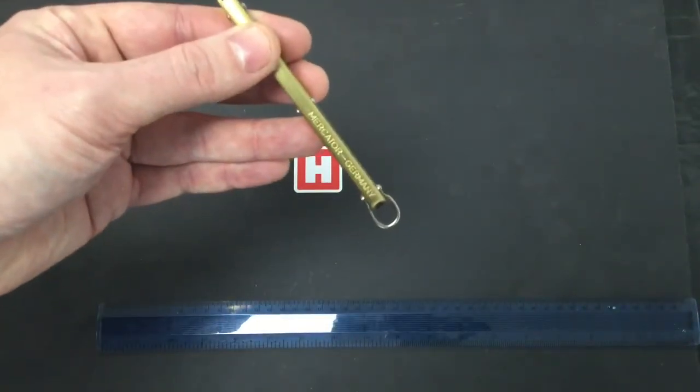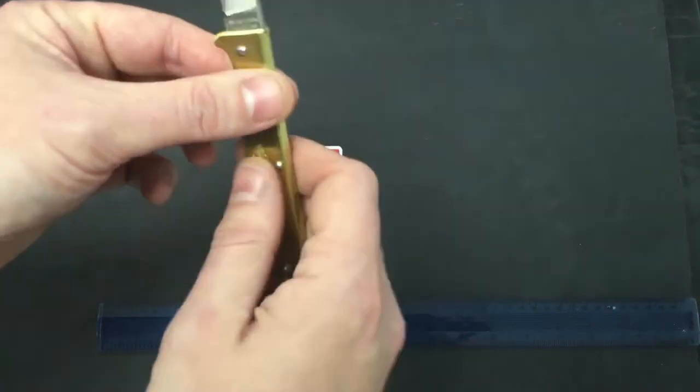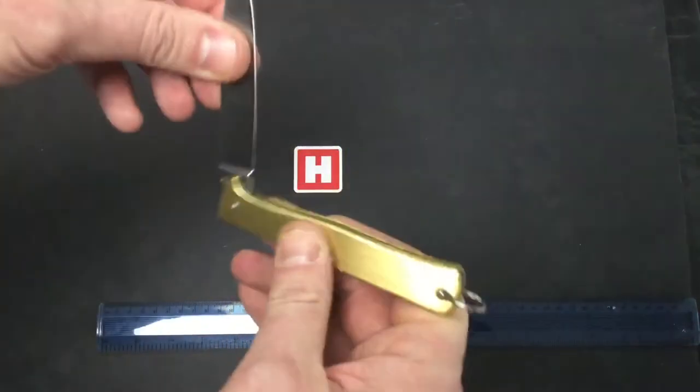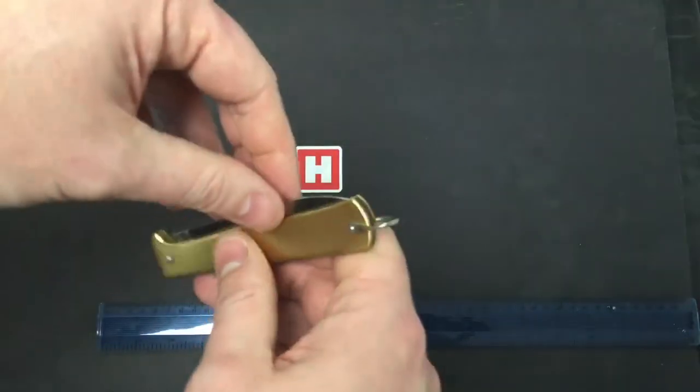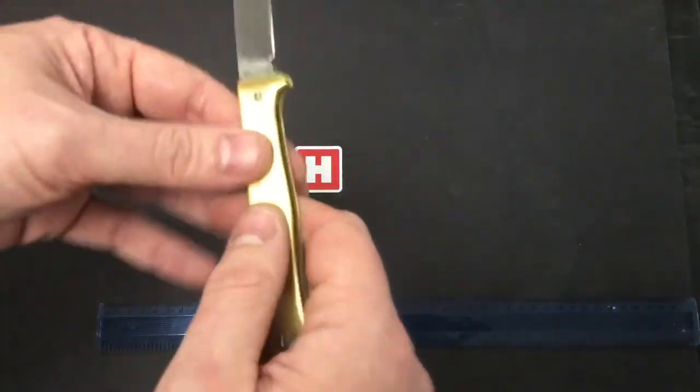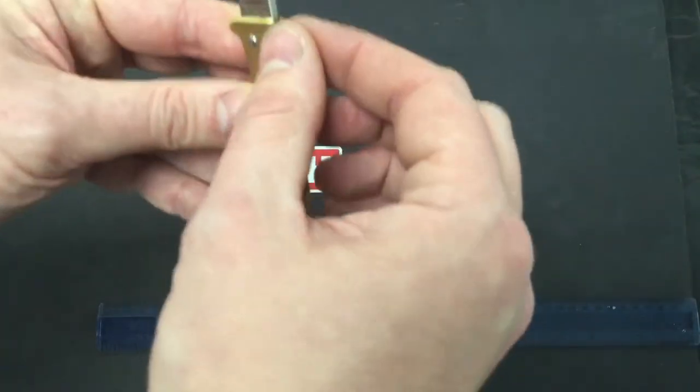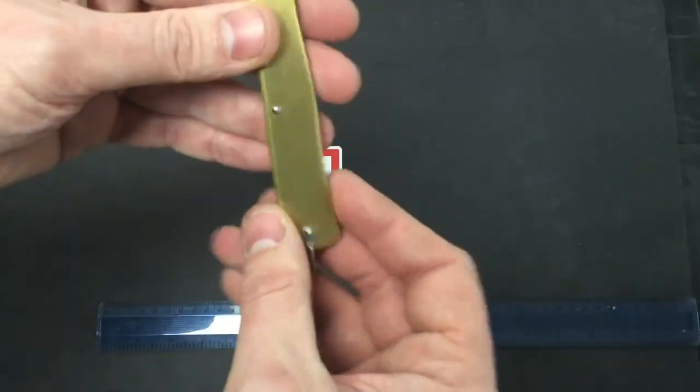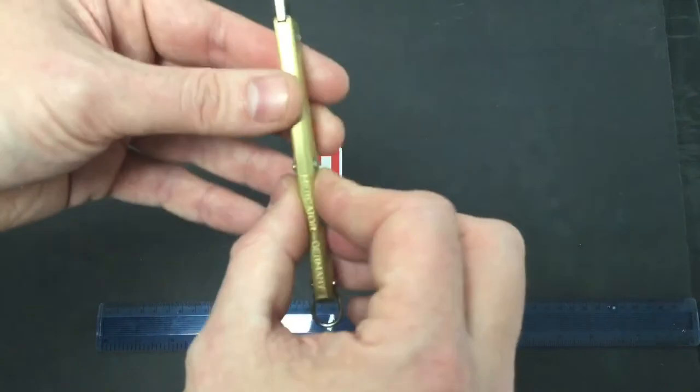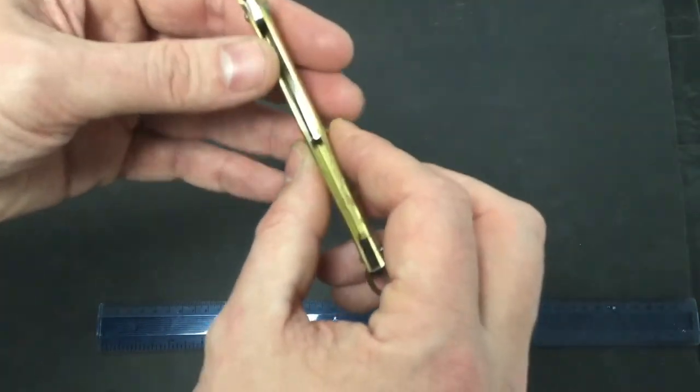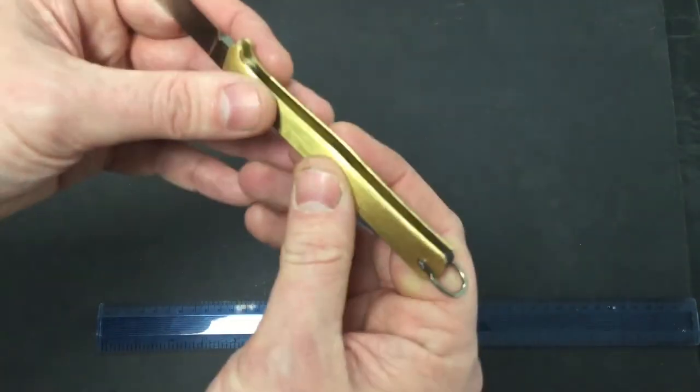The MECAT of Germany traditional slip joint knife with bail. One piece, you can see no joins, no separate scales, one piece with your internal spring to give the tension.